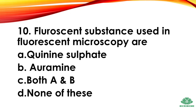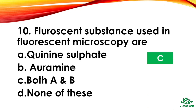Question 10: Fluorescent substances used in fluorescent microscopy are — options: quinine sulphate, auramine, both A and B, none of these. The right answer: option C, both A and B.